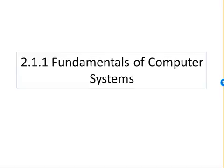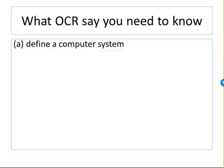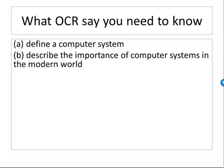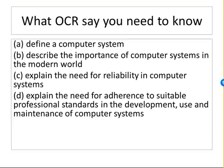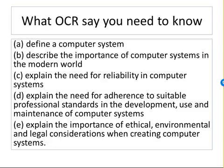Hello and welcome to this video regarding Protection 2.1.1 Fundamentals of Computer Systems of the OCR GCSE Computing Specification. This is intended as revision material — if you're revising for your exams at the moment, good luck. OCR say that you need to be able to define a computer system, describe the importance of computer systems in the modern world, explain the need for reliability in computer systems, explain the need for adherence to suitable professional standards for the development, use and maintenance of computer systems, and explain the importance of ethical, environmental, and legal considerations when creating computer systems. Let's get on with it.